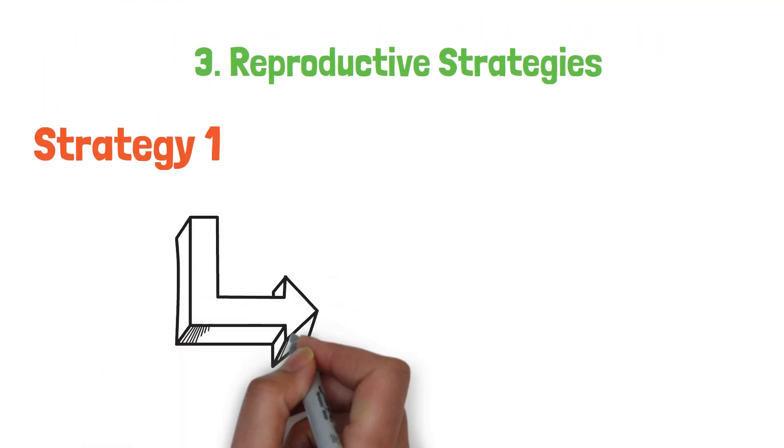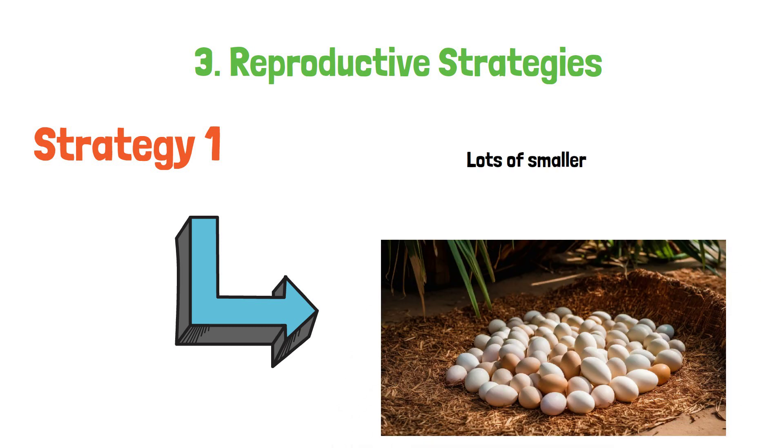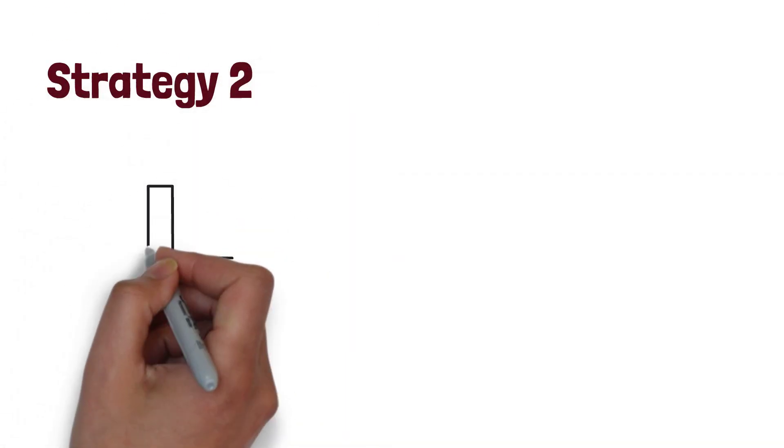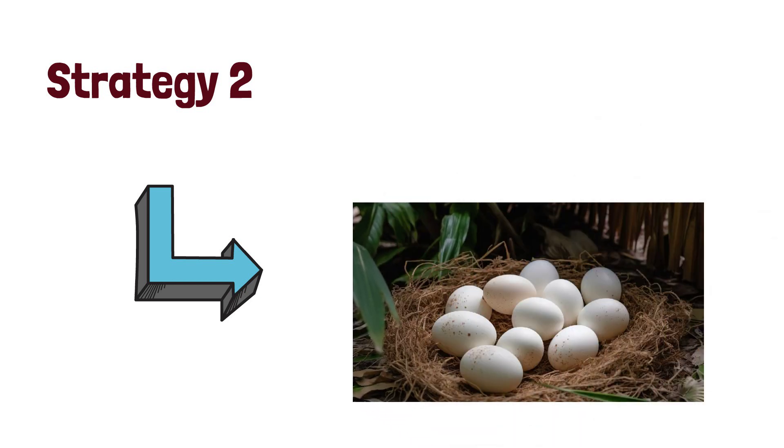3. Reproductive strategies. Different snail species employ diverse reproductive strategies to maximize survival. Some snails lay a large number of eggs in a single clutch, increasing the chances that at least some will survive. Others may lay fewer eggs but invest more energy into each one, ensuring a higher likelihood of survival for those that do hatch.